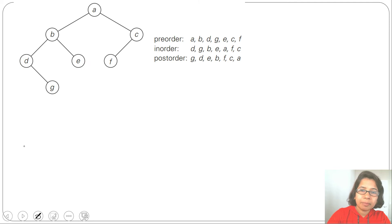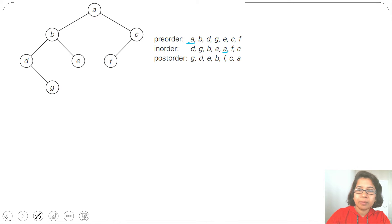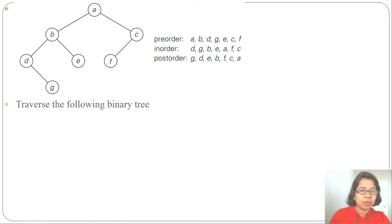Just note: in pre-order the root comes first, in in-order the root is in the middle, and in post-order the root is the last node.